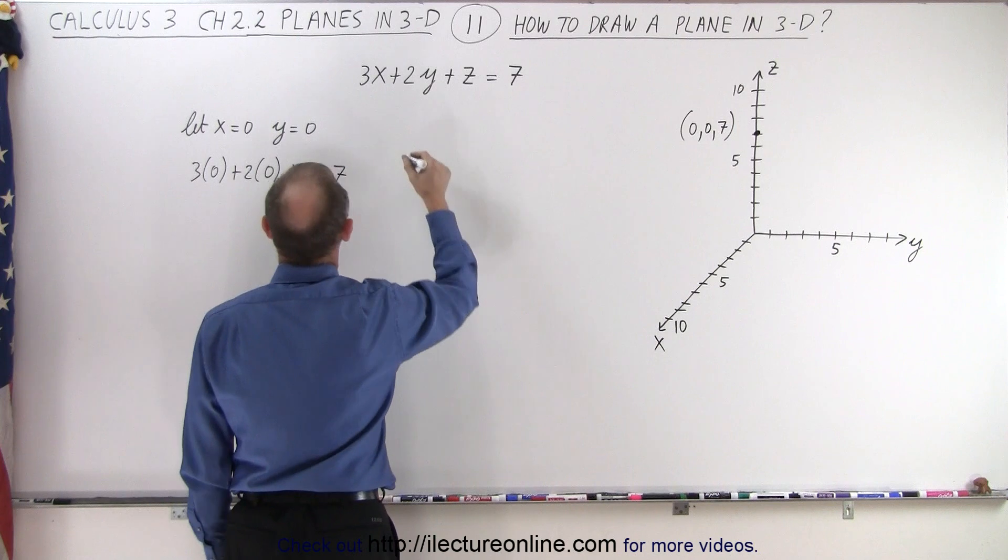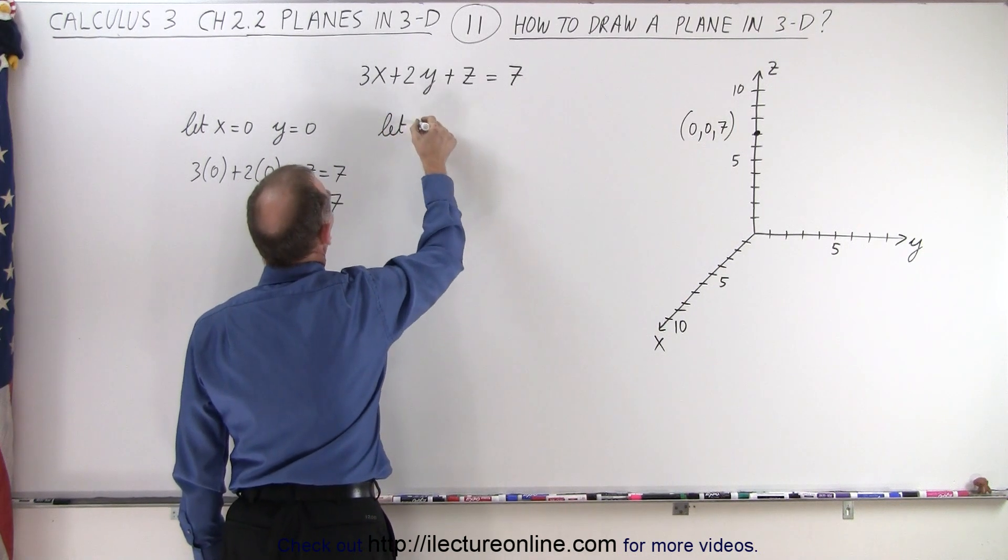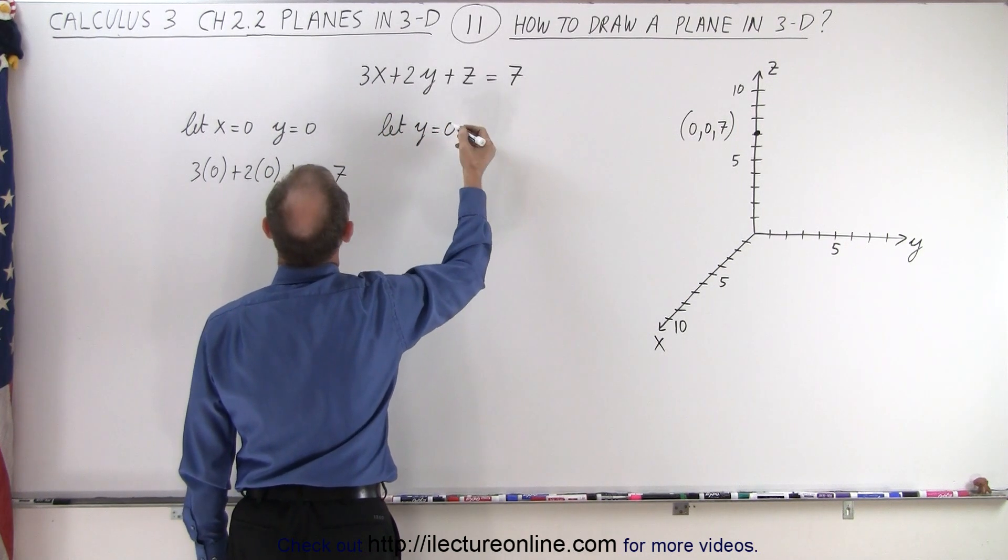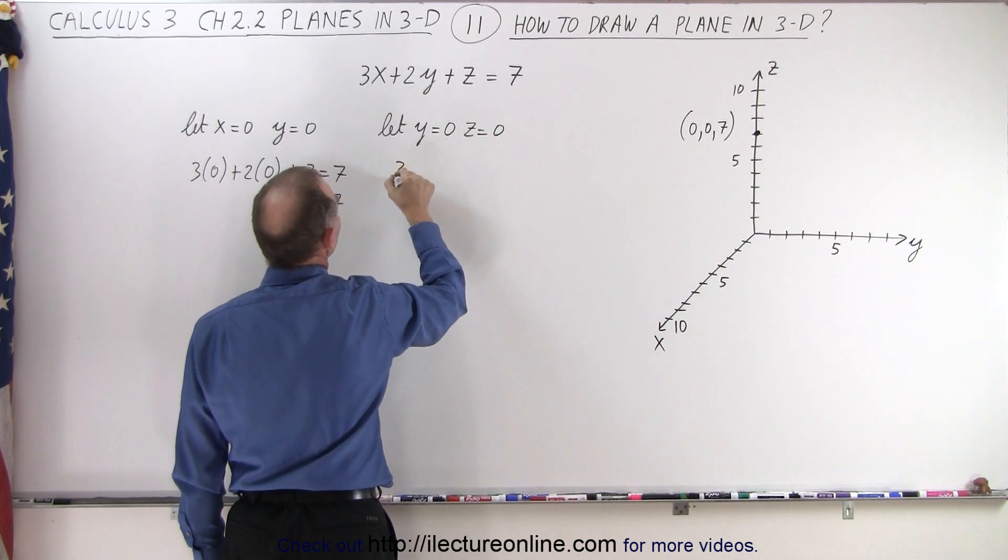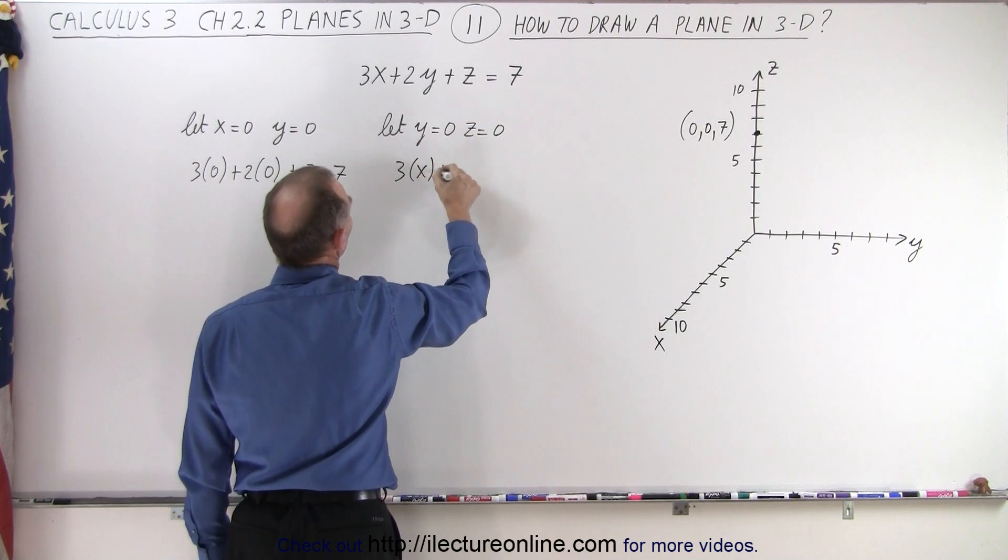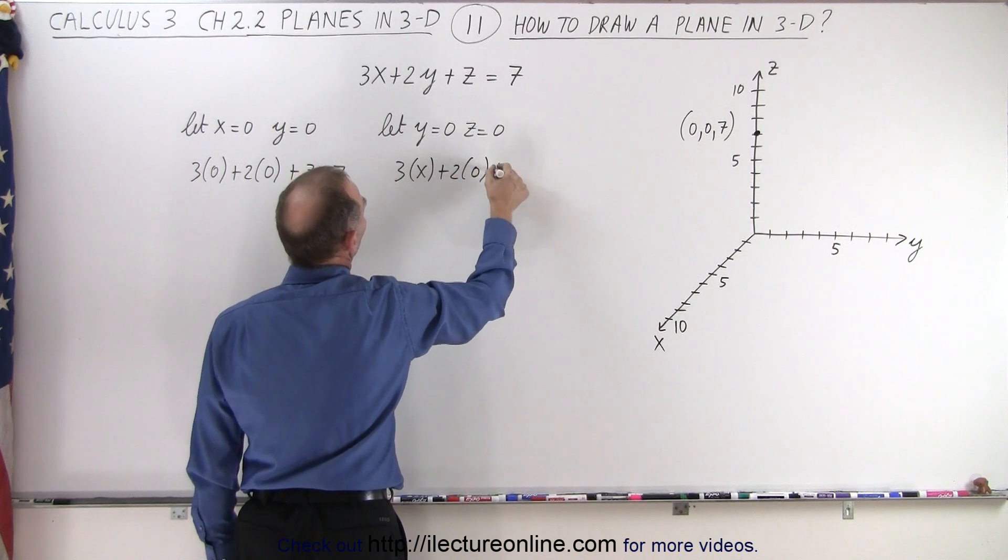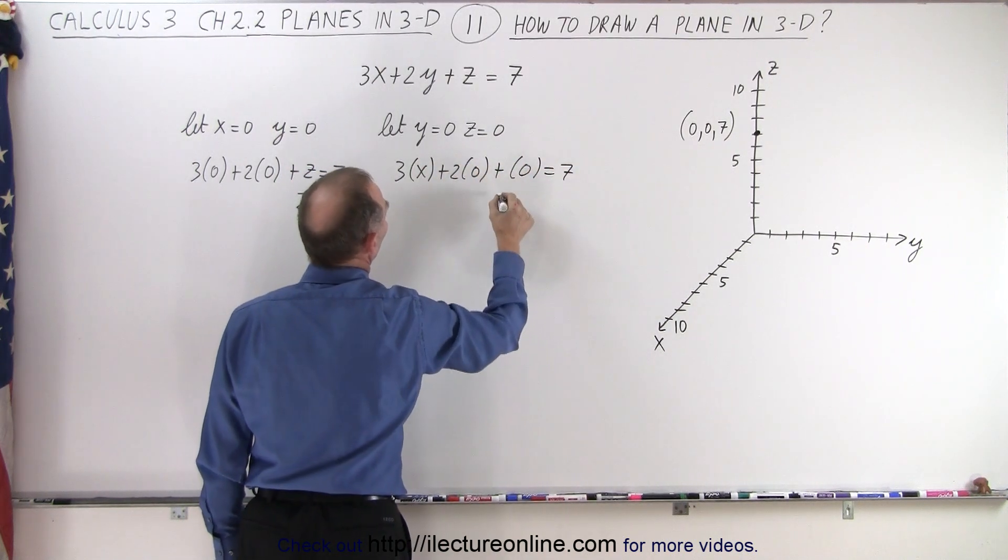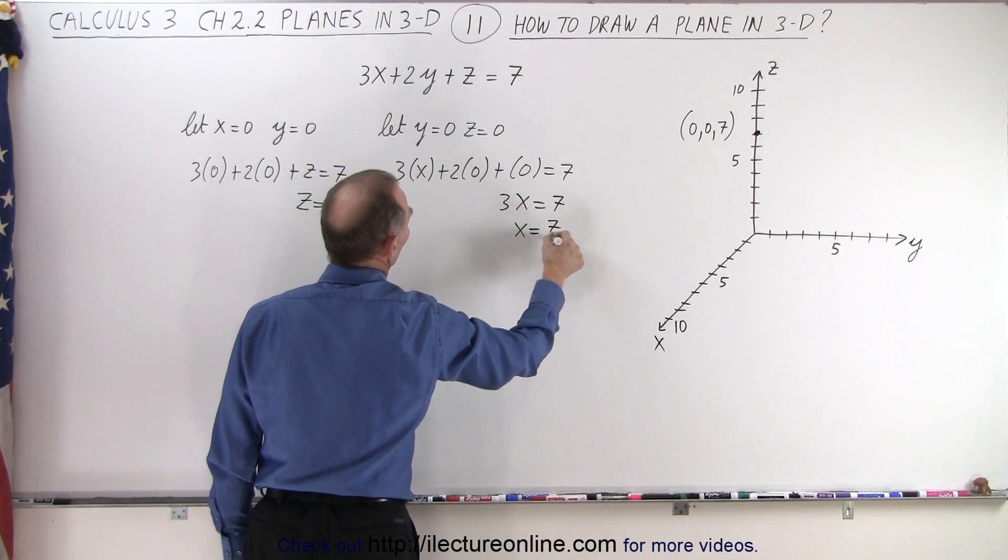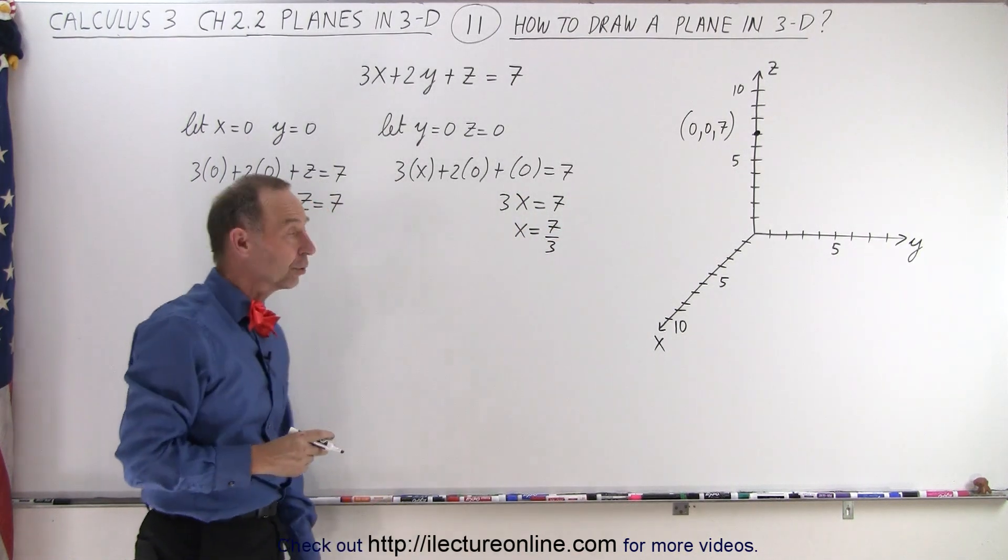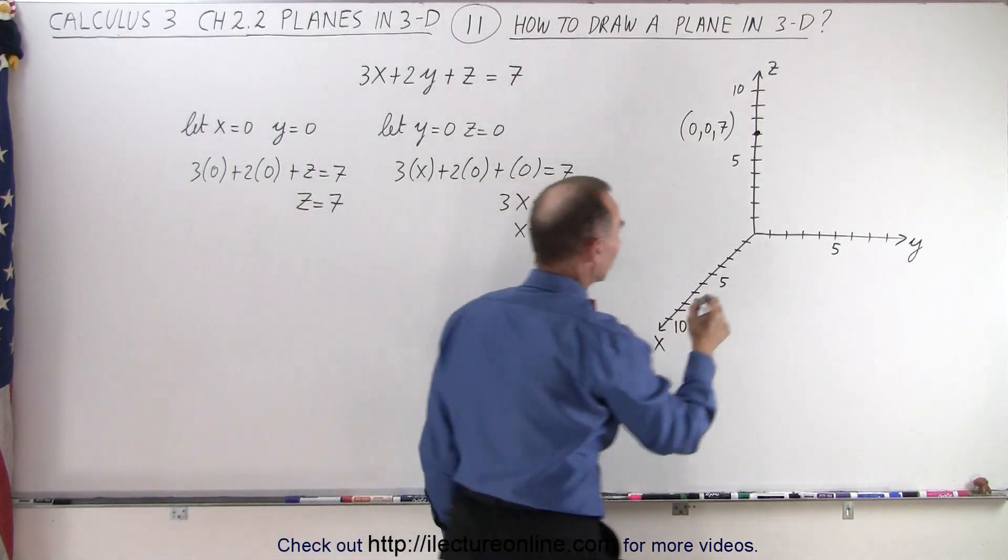Okay, we'll do the same, but now we're going to let y equals zero and z equals zero. That means we have 3 times x plus 2 times zero plus zero equals seven, or 3x is equal to seven, or x is equal to seven over three, which is slightly over two.